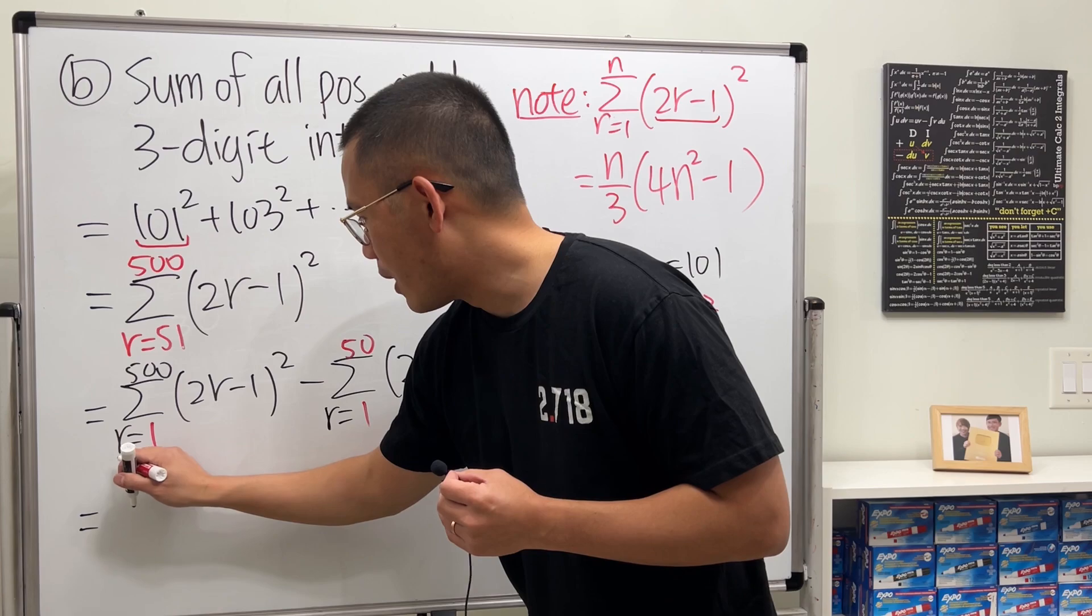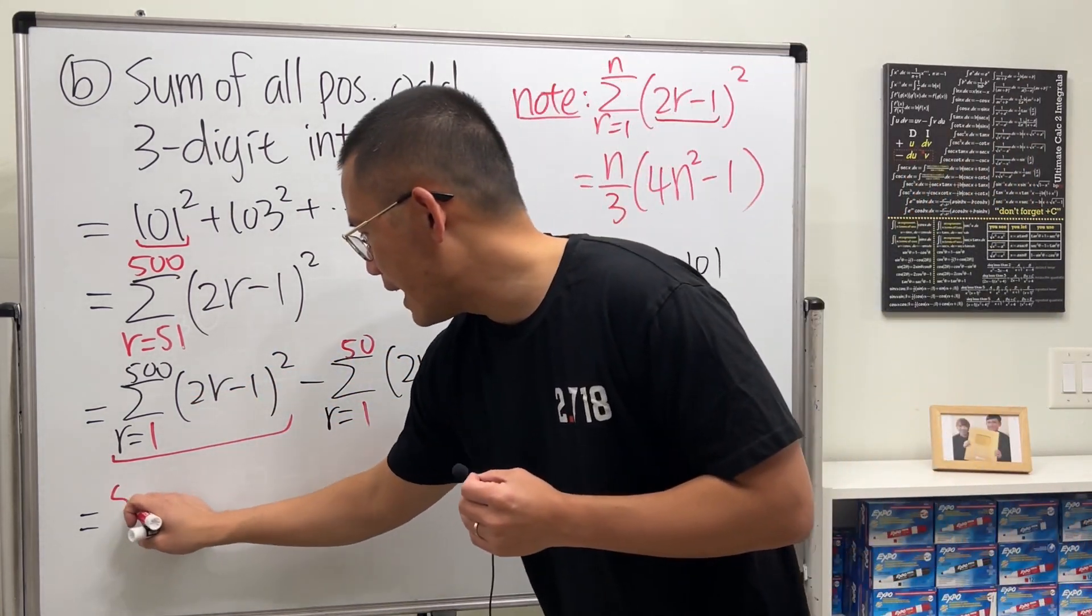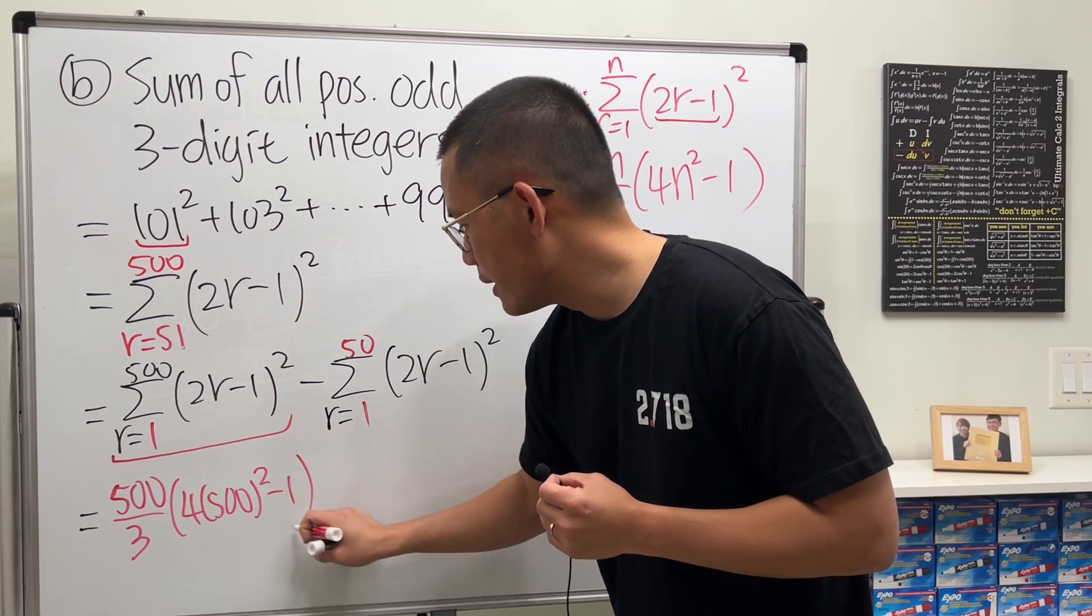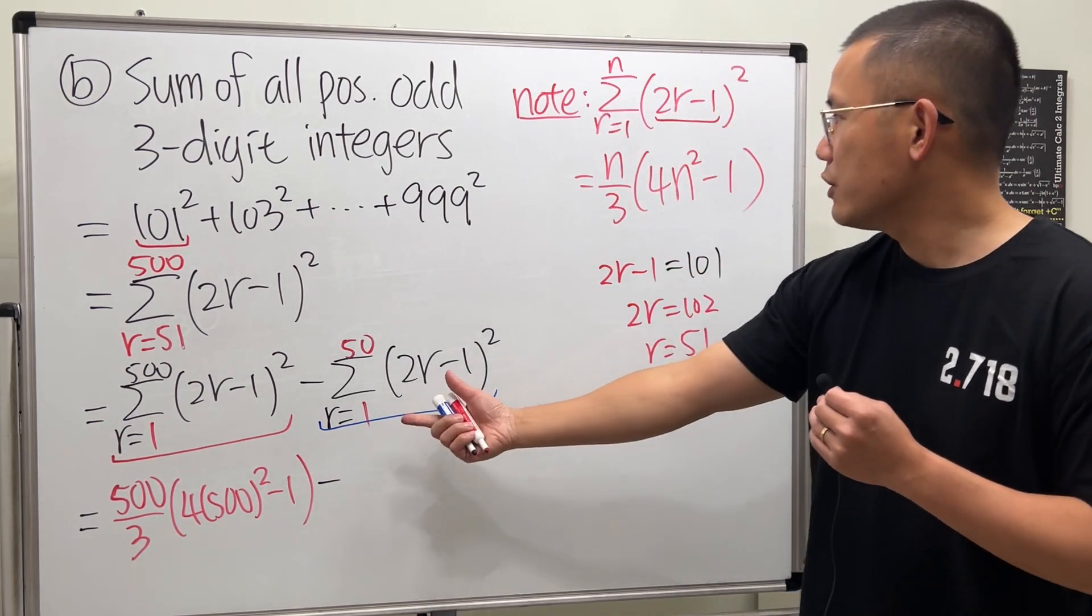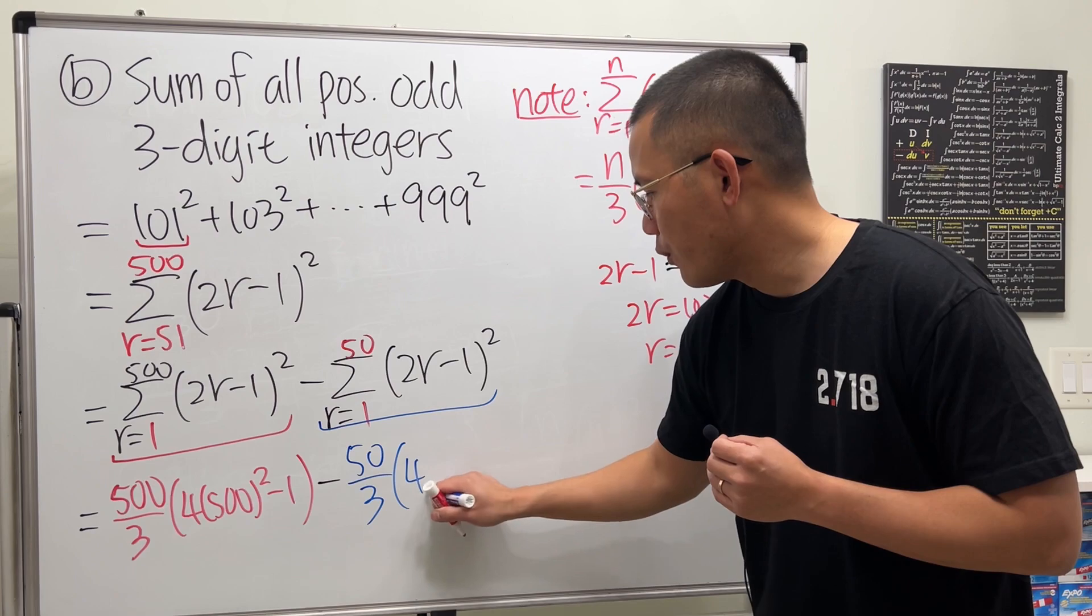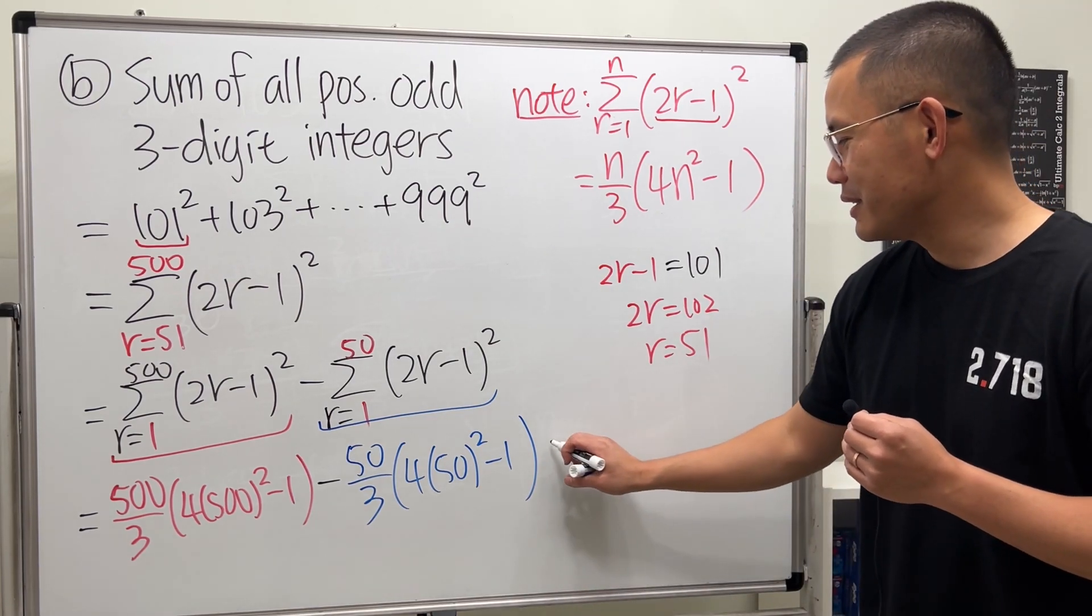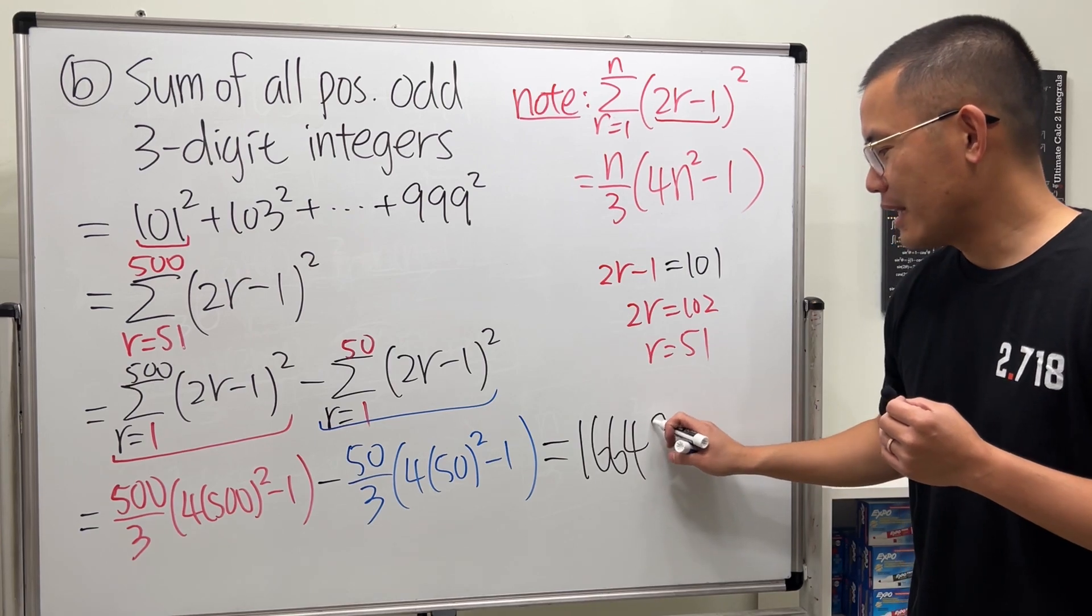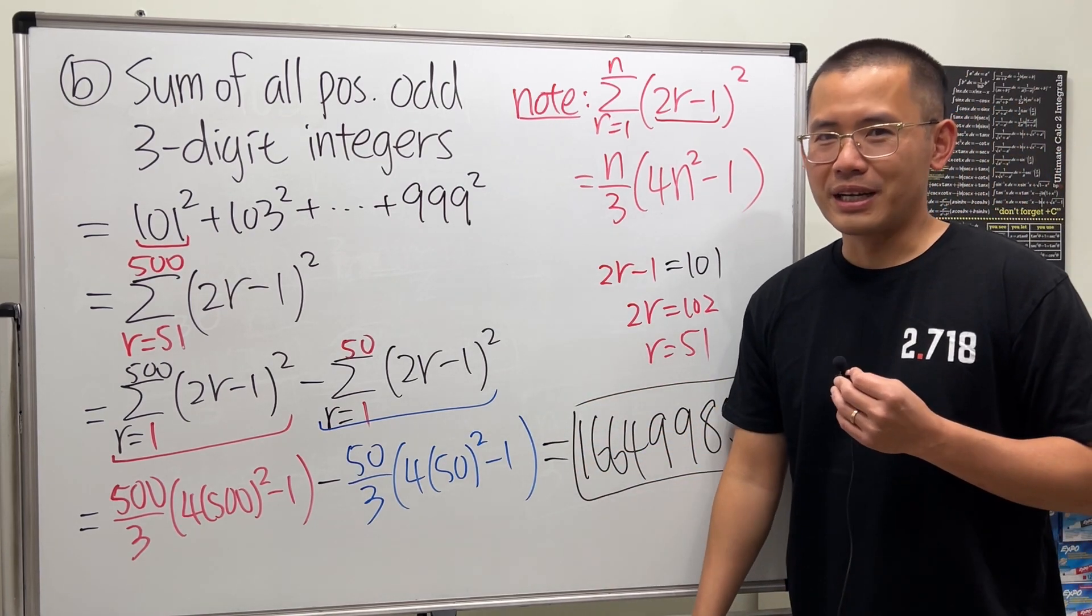So, here we go. For the first part, I'm going to put this in red. Plug it into this formula with n being 500. So, we will have 500 over 3 times 4 times 500 squared minus 1. That's the first part. Then, for this part, we'll just have to subtract the result of that. We put 50 into this n and that n. So, that's 50 over 3 times 4 times 50 squared minus 1. And, of course, I'm not going to work this out by hand. I'm just going to tell you what the answer is. I have it over there. I set out a little iPad over there so I can see the answer. So, it's 1, 6, 6, 4, 9, 9, 8, 5, 0. Okay, so you can use the calculator for this one. That's it.